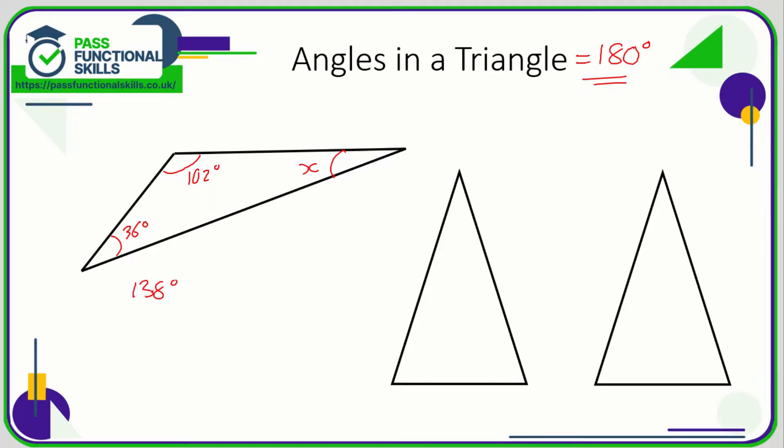So 138 of the 180 degrees have been accounted for in these two angles here. So if I subtract 138 from 180 I'm going to get x, so x is 42 degrees.